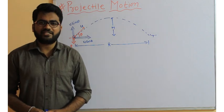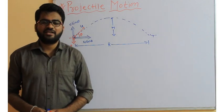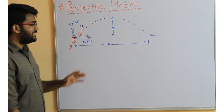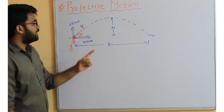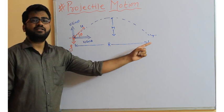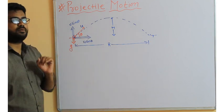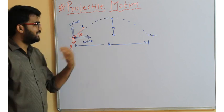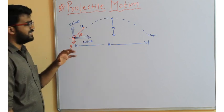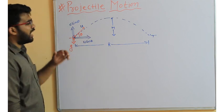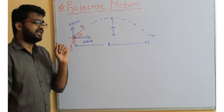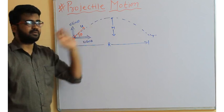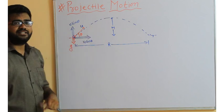Hello students, welcome to my channel Physics Tricks. Today we will study about projectile motion. In this, three quantities are very important: range, height, and time of flight. This height is maximum height. Now, how to find these? If you have the kinematics knowledge, you can easily find out the maximum height, range, and time of flight. So firstly, I am calculating the maximum height.